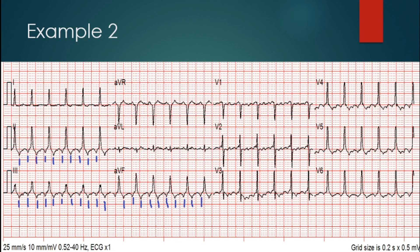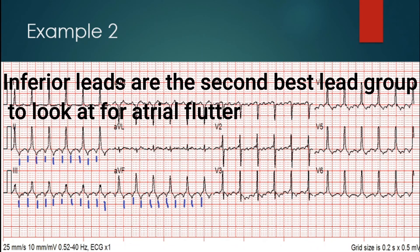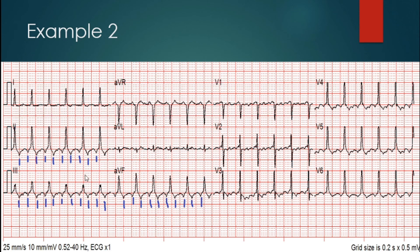Now let's check out the second example. Let's check out V1's atrial activity — you can see a little bit there. Like I said before, look everywhere for atrial activity. In this example you can see parts of the flutter waves inside the inferior leads, highlighted in blue, and you can see they're marching out at a consistent rate of around 300 beats per minute.